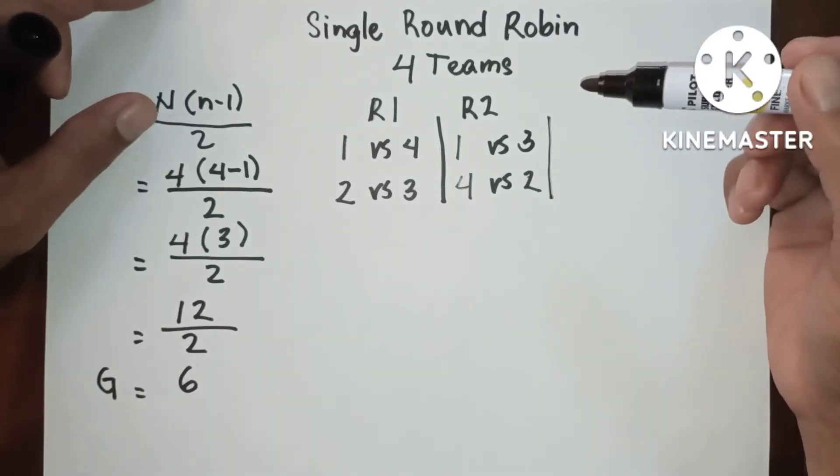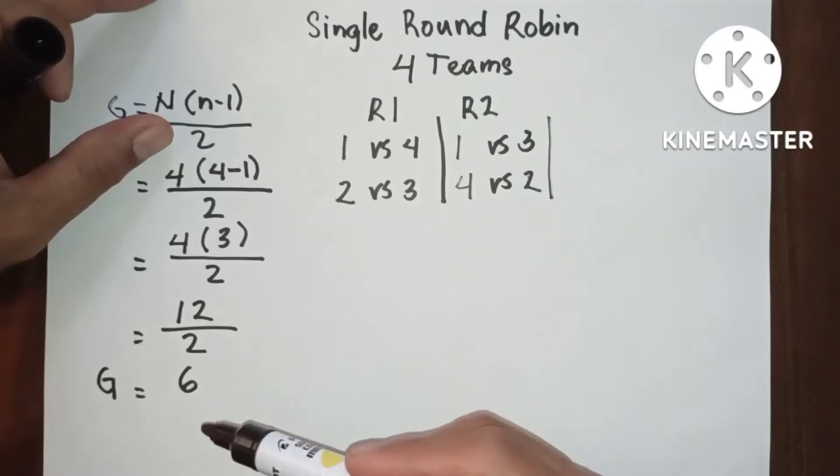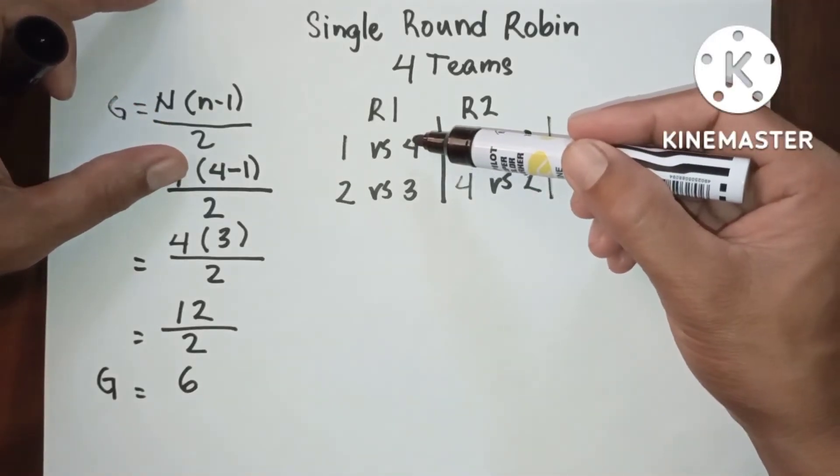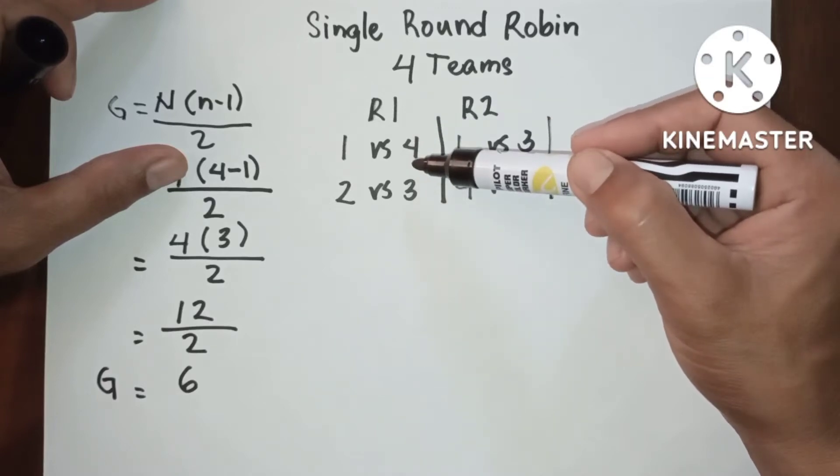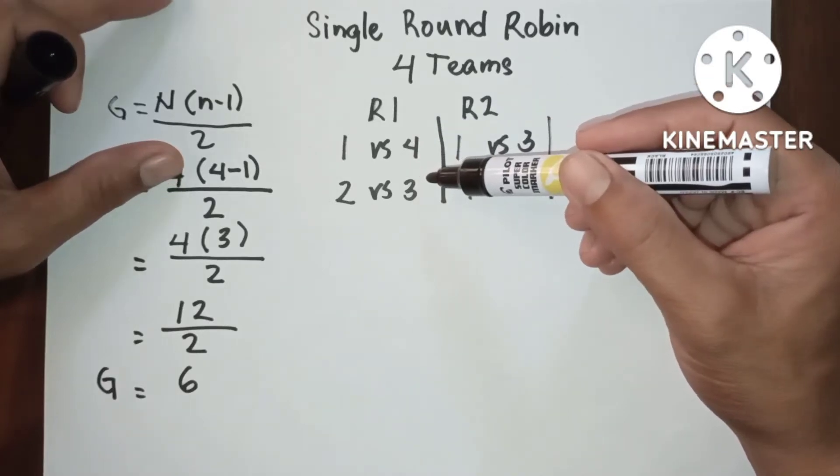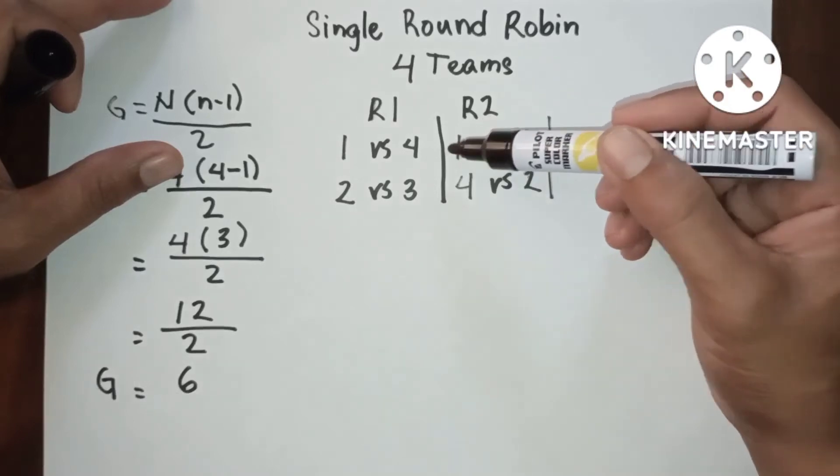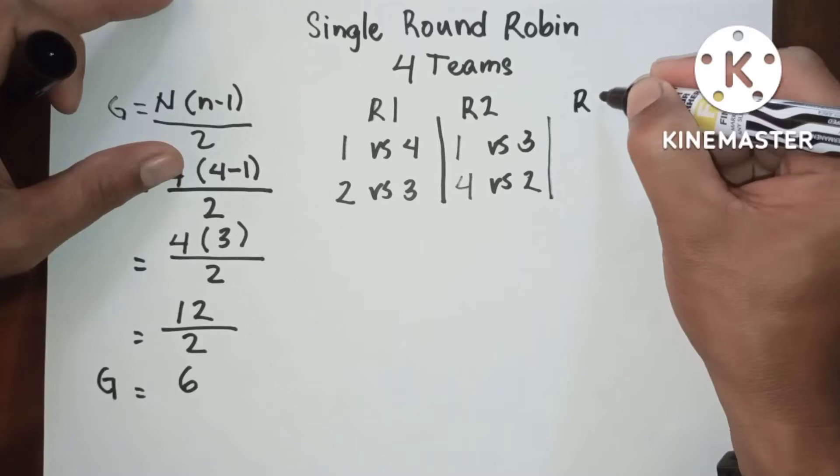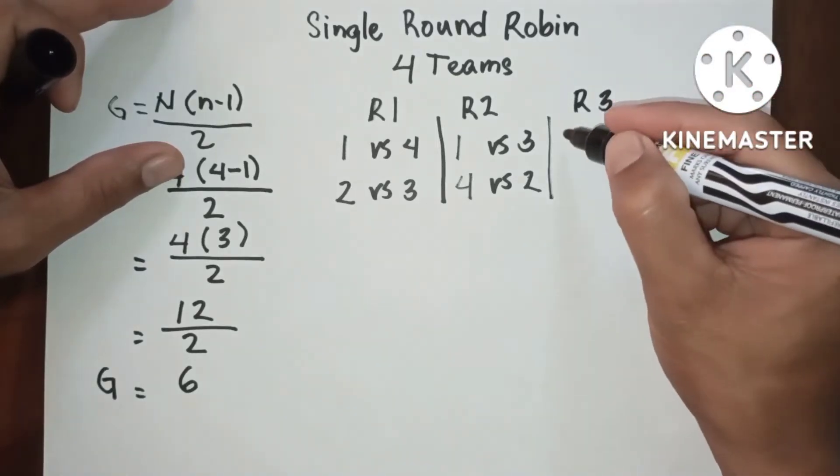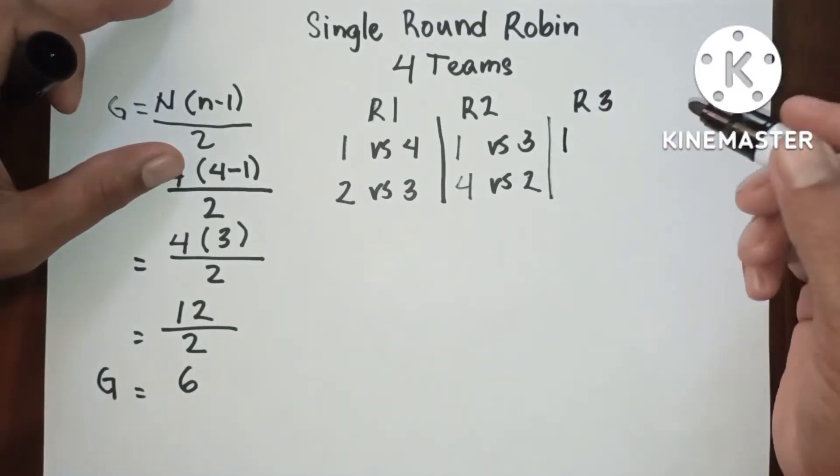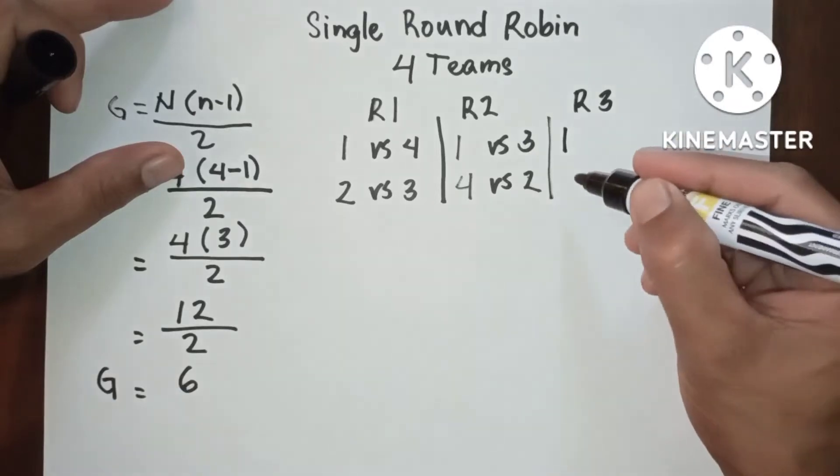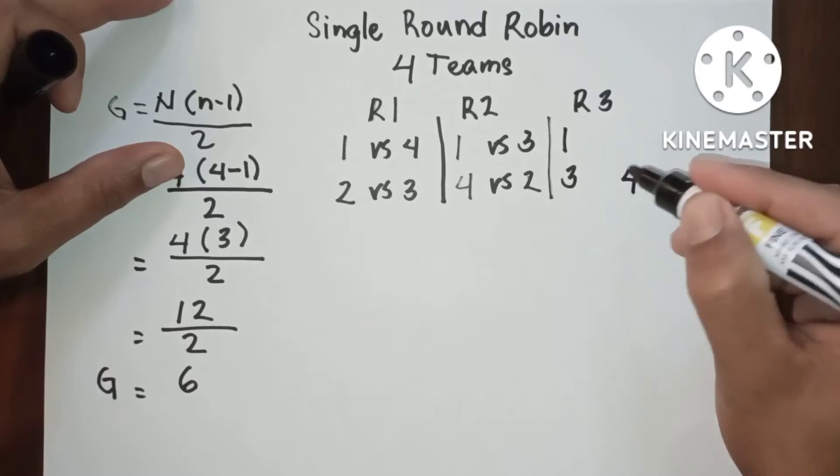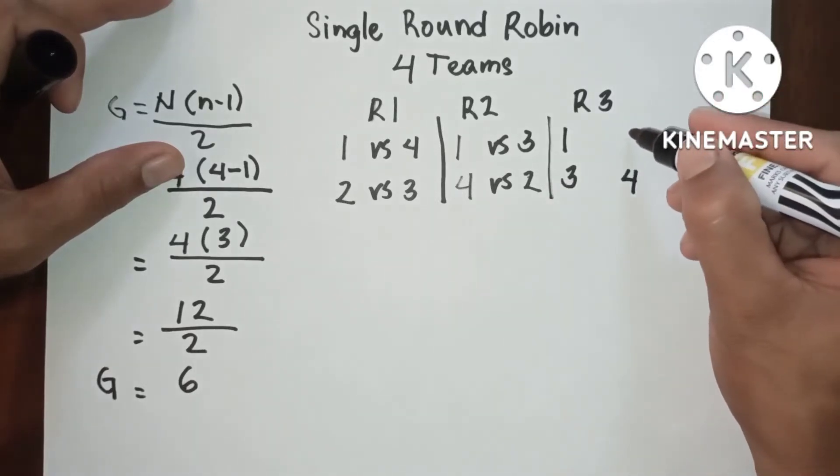Now just remember that if we have six games and we have two games in round one, meaning we only have three rounds. Now let's proceed to third round. So one will remain in the position and three will be placed here, four will be placed here, and two will be placed up here.